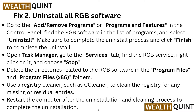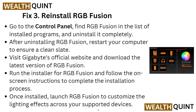In Task Manager, go to Services and find the RGB service. Right-click and choose Stop. Then delete all the directories related to the RGB software in the Program Files and Program Files (x86) folders. Use a registry cleaner such as CCleaner to clean any residual registry entries. Restart your computer after the cleaning process to complete the uninstallation.